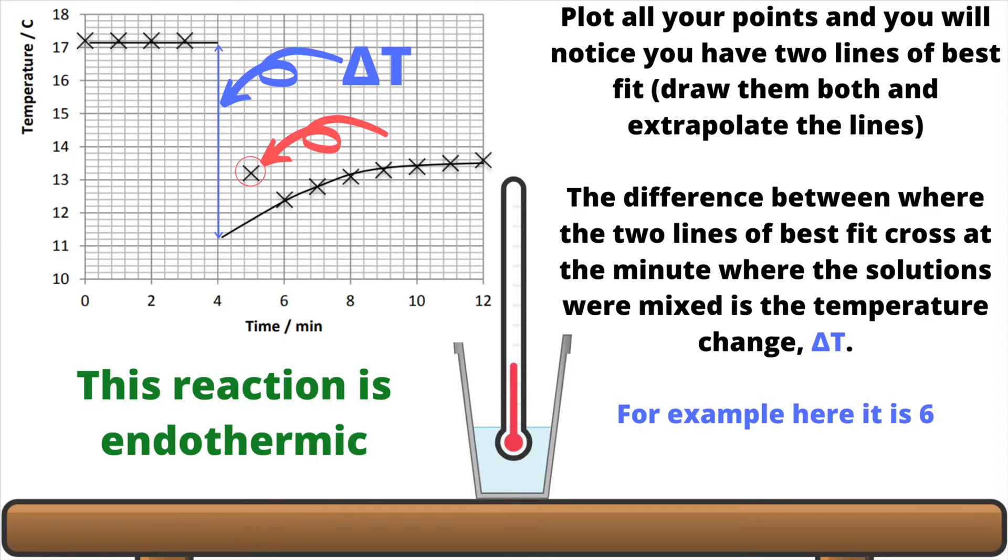Finding the delta T then is nice and simple. I've got one line drawn up at minute four and I've got my two lines of best fit which have extrapolated, which remember just means extended towards this line at minute four. Now the difference between where the two lines of best fit cross at this line that I've drawn up at minute four is going to be my delta T. You can see I've labeled this on with a double-headed blue arrow which is the vertical line that's been drawn onto the graph.